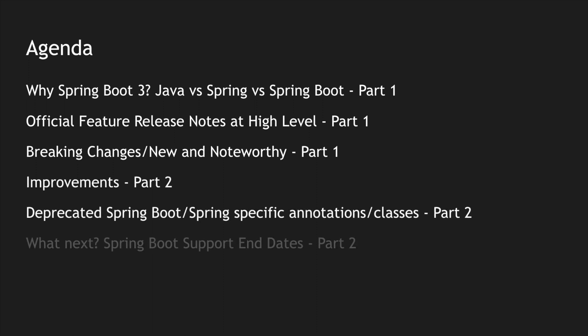The agenda is broken into two sections. In the first part, we'll look at why Spring Boot 3 was created, the correlation between Java, Spring, and Spring Boot frameworks. We'll look at the official feature release notes at a high level, break down the breaking changes with respect to Spring Boot 3.0, and look at new and noteworthy features. I'll also show a quick demo on how to identify deprecated code, annotations, or methods.